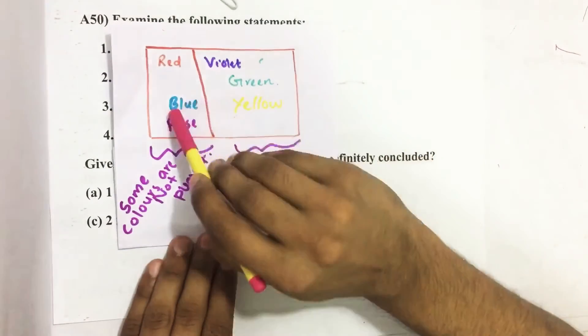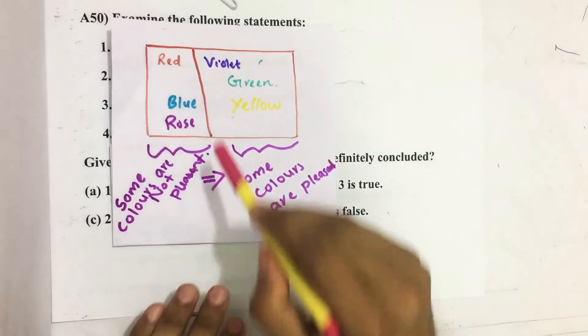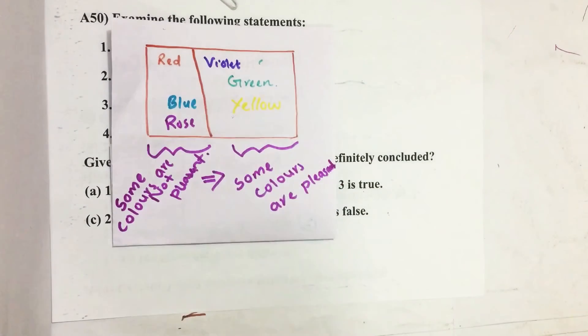Here I took one example. This is a set of six colors, out of which some colors are not pleasant. That implies some colors are pleasant.